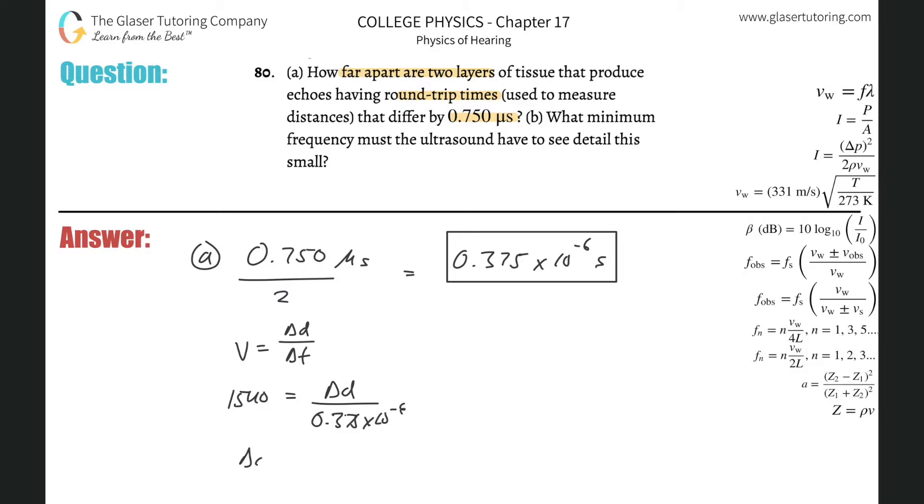The change in distance, or the difference in depth, is 1540 times 0.375 times 10 to the minus 6. This is about 5.78 times 10 to the negative 4th meters. You can convert that into millimeters if you like, but that would be the difference in distance.